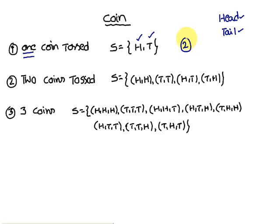If two coins are tossed simultaneously, there is a chance that both may be heads, both are tails, the first one is head and the second is tail, or the first is tail and second is head. Therefore four outcomes are there, so the sample space has four elements.